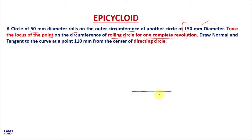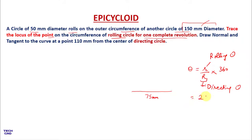First, you have to make a horizontal line. This horizontal line represents the directing circle — in this case it is 75 mm. After that, you have to find out the sector angle. The sector angle formula is: small R divided by capital R, into 360, where small R is the radius of the rolling circle and capital R is the radius of the directing circle. So theta = 25/75 × 360 = 120 degrees.